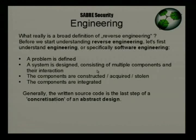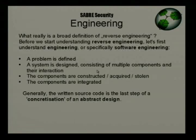When you engineer, you have a problem, you define it, and then you design a system consisting of multiple components and their interactions. You construct these components, integrate them, and hopefully your problem is solved. In software, this means the source code you compile is the last step of a concretization process — you start with an abstract design and whittle down to source code, then compilation, testing, and selling.